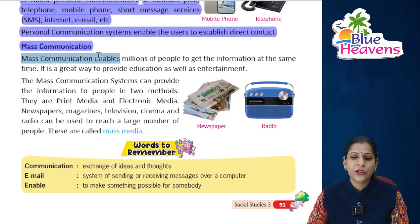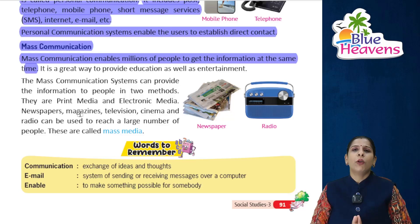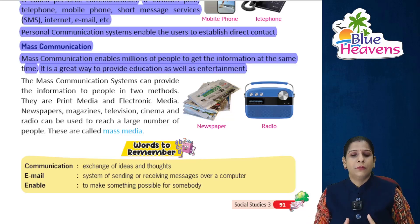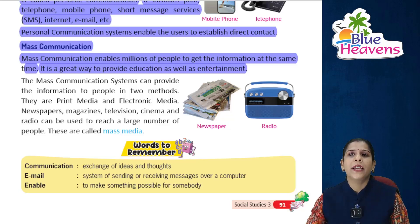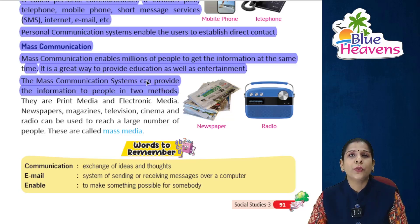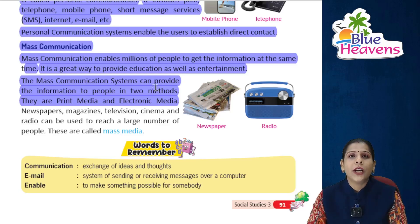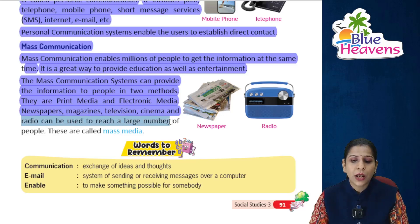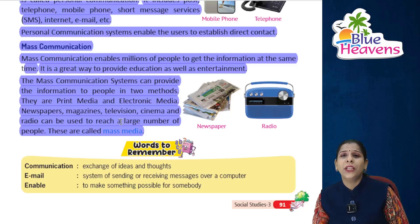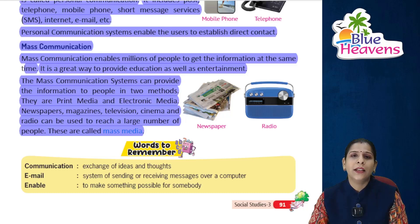Mass communication enables millions of people to get information at the same time. It is a great way to provide education as well as entertainment. Mass communication systems can provide information in two methods: print media and electronic media. Newspapers, magazines, radio, television, and cinema are examples of mass media — they can reach a large number of people.